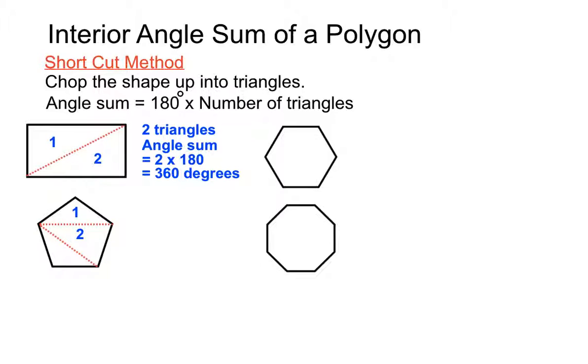One, two, three triangles. So this time we'll do three lots of 180 degrees. 180 degrees for each of the three triangles gives us a total angle sum of 540 degrees. Which once again is what we got, the result we got from our equation or our formula. But it's just a quick method here.